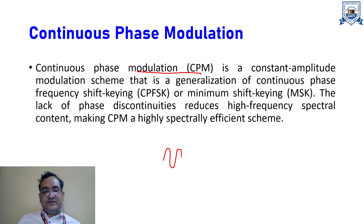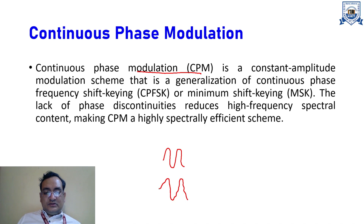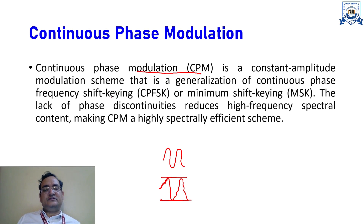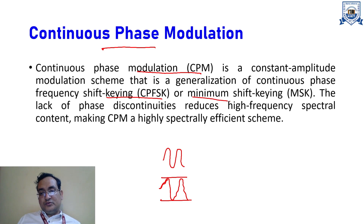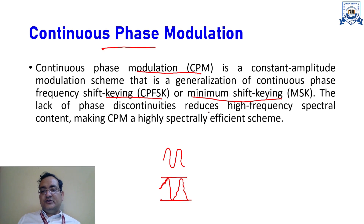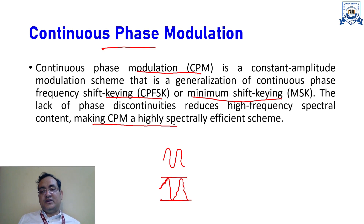If you consider a sine wave it has a constant pattern, but for CPM the phase varies continuously — so the waveform will not look consistent, though the peak amplitude remains constant. CPM is therefore a constant amplitude modulation scheme. It is a generalization of Continuous Phase Frequency Shift Keying (CPFSK), and MSK is also a subcategory of CPM. The lack of phase discontinuities reduces high-frequency spectral content, making CPM a highly spectrally efficient scheme.